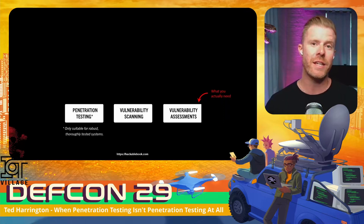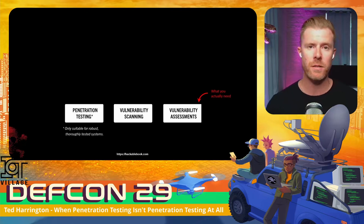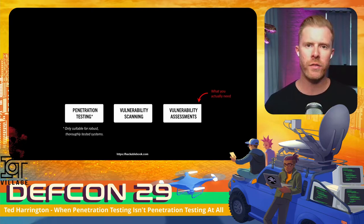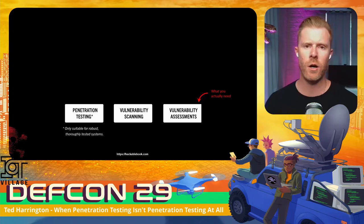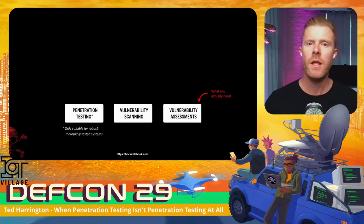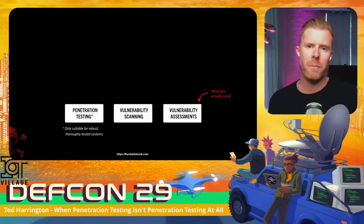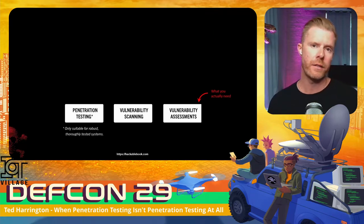What most organizations actually need, in most cases, are vulnerability assessments. Vulnerability assessments are more comprehensive approaches to really understand how all the different security mechanisms of a system work. Thinking holistically: how well will the system perform against an attack? Going back to our car metaphor, this is like the entire automotive safety engineering department. They evaluate how all the safety systems work together — the airbags, side impact beams, lane departure technology — to really maximize the likelihood that in the event of an accident, the passenger will walk away safely.